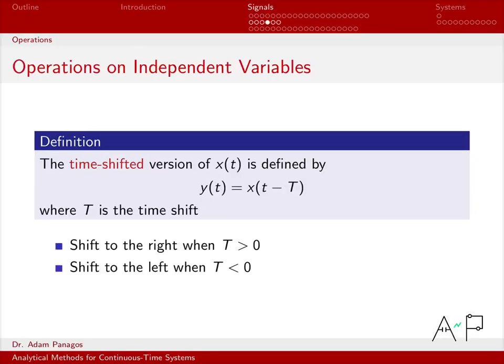So if we have a signal x of t, and we want to create a time shifted version of it, we replace t, the time variable, with t minus capital T. This is what we call the time shift.